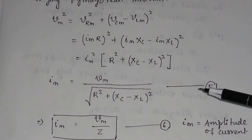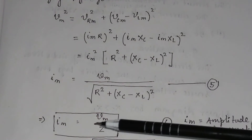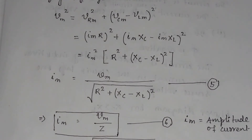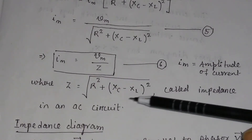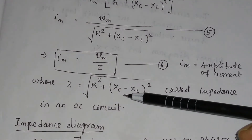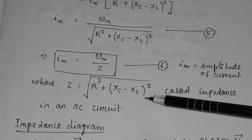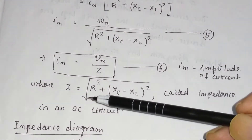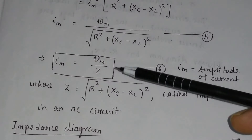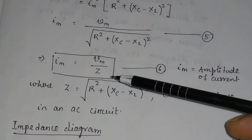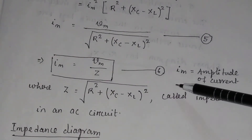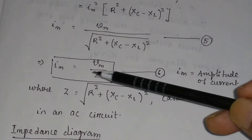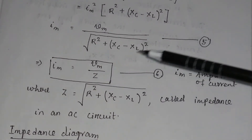This is equation 5. We write Im = Vm / Z, where Z = √[R² + (Xc − XL)²] is called the impedance of the AC circuit. Im = Vm / Z gives the amplitude of the current in the LCR circuit.